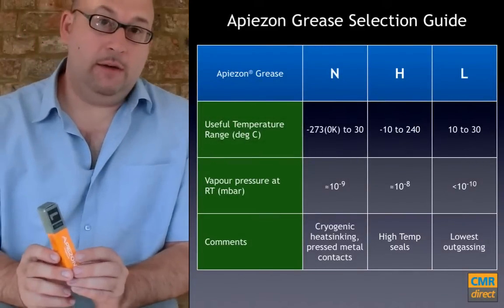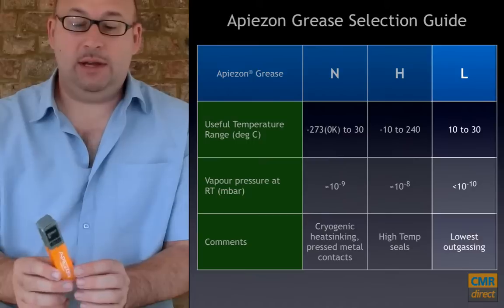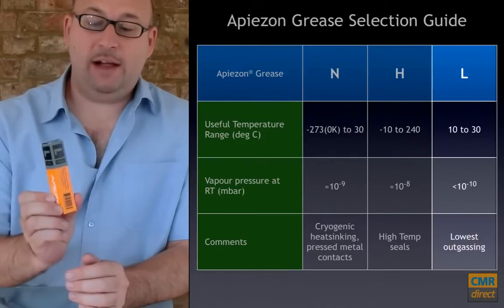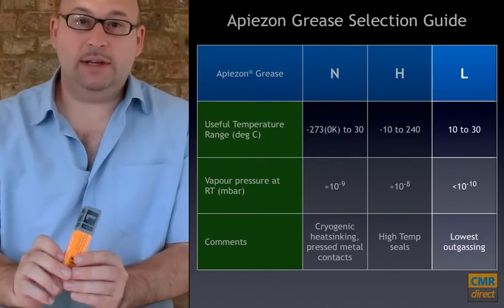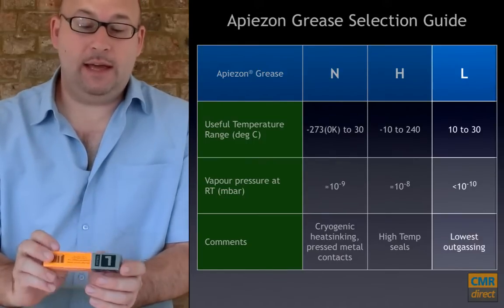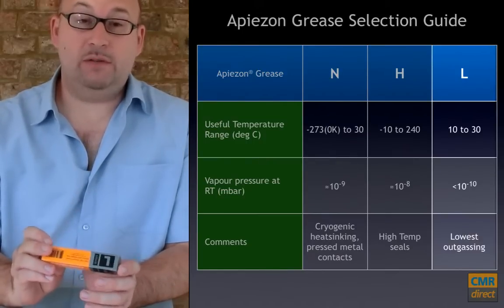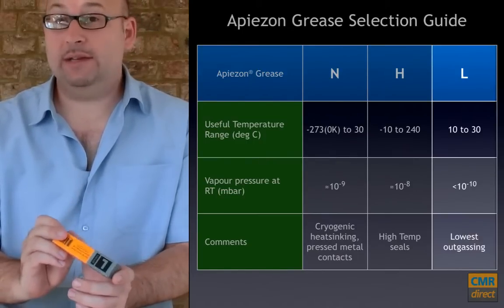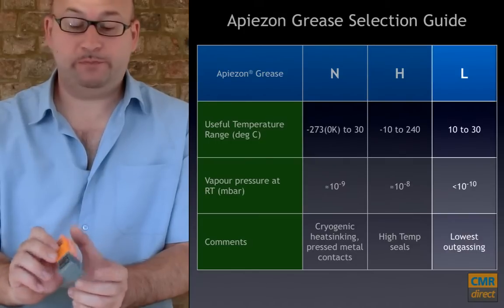If you're really after the ultimate in low vapor pressure, then Apiezon L has a vapor pressure of better than 10 to the minus 10 millibars at room temperature.